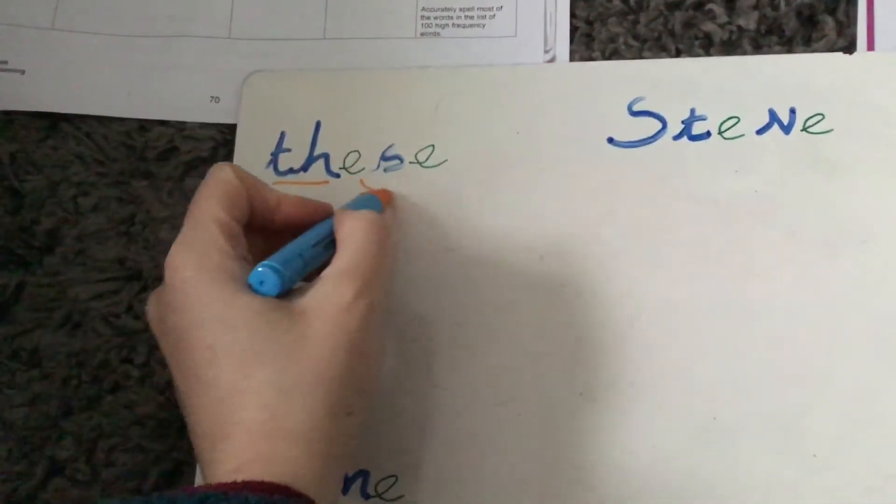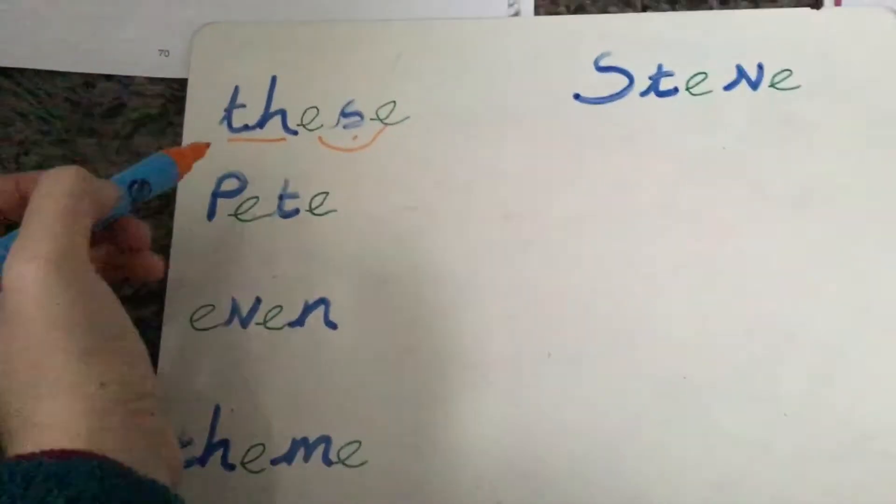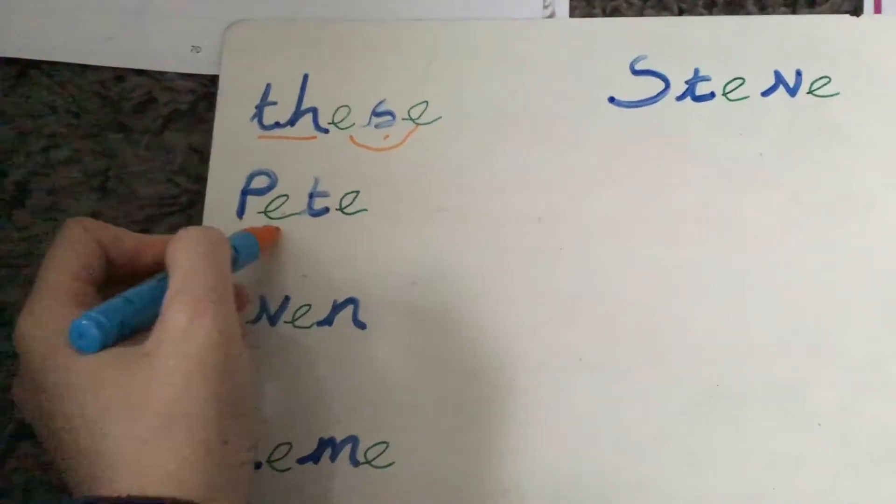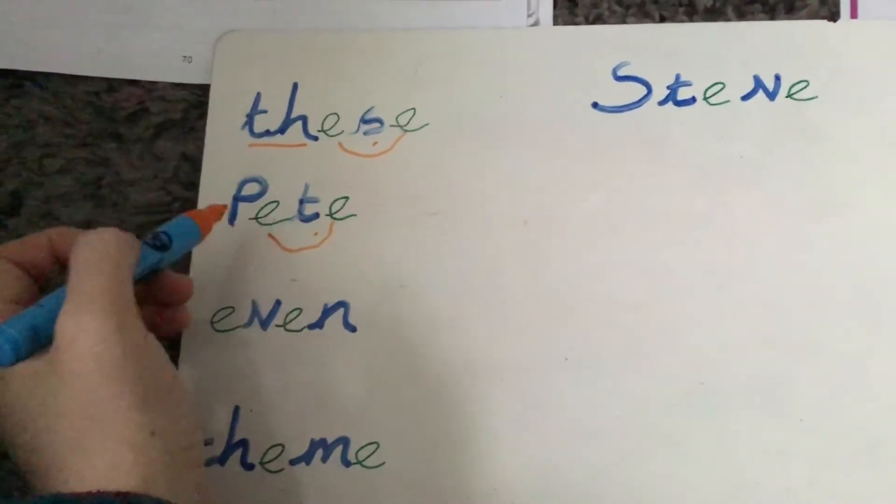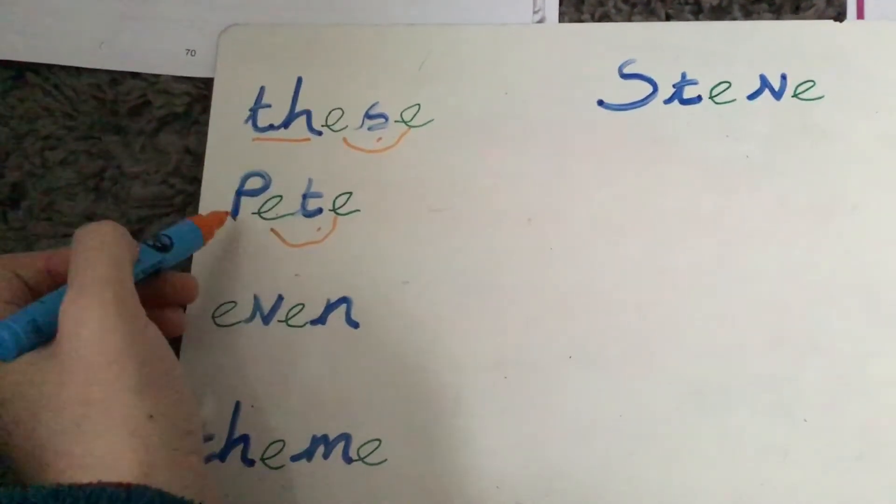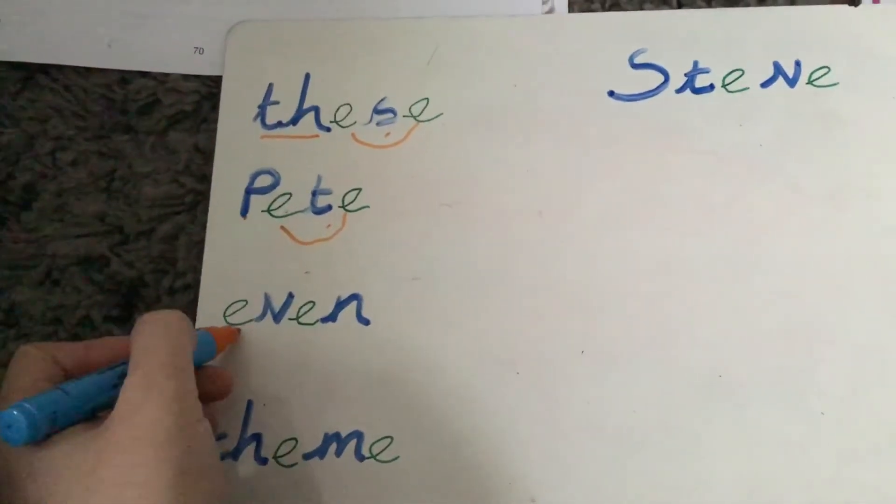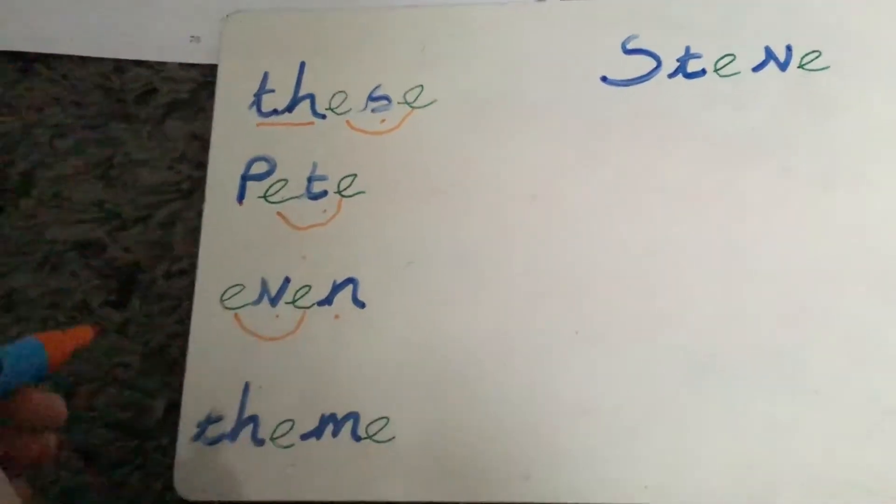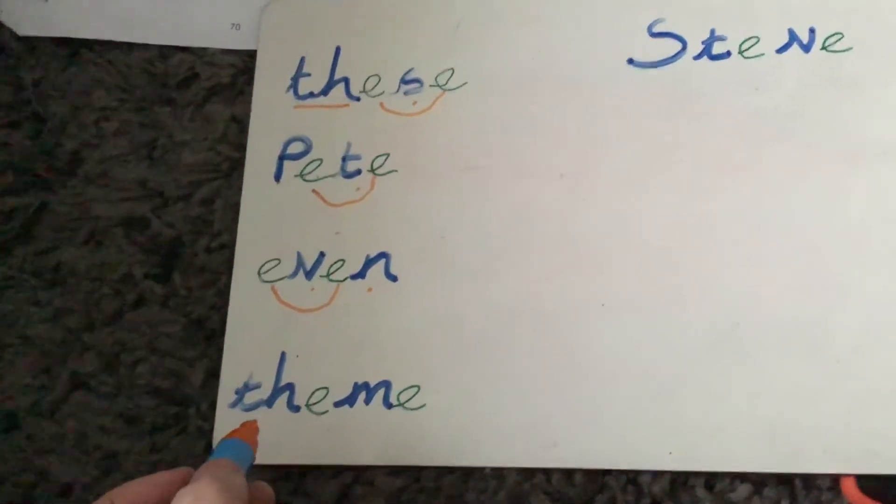So we've got these. These. These trees look beautiful. Good. Pete. Pete. Now I know it's somebody's name because capital letter. Even. Even. Odd and even.